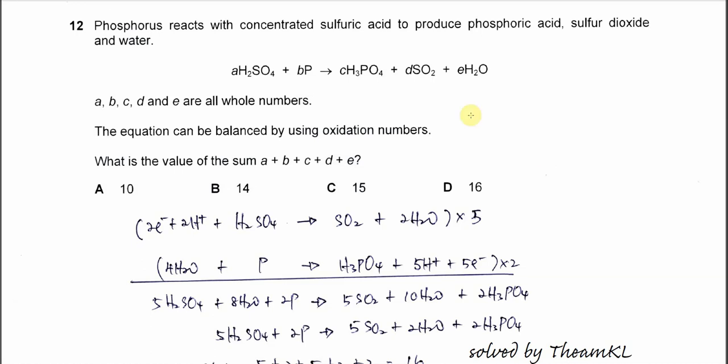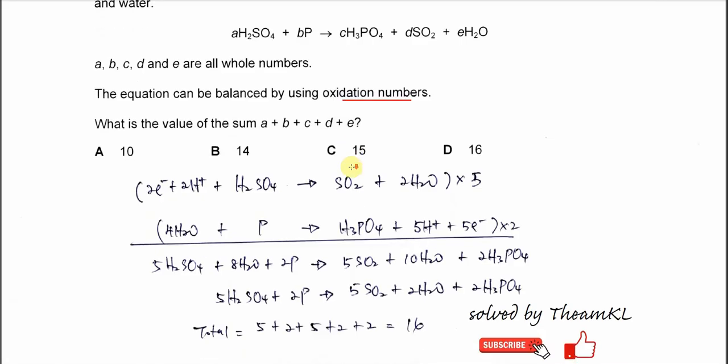Question: Phosphorus reacts with concentrated sulfuric acid to produce phosphoric acid, sulfur dioxide, and water. This is a reaction equation with unknown coefficients for these reactants and products. Where a, b, c, d, and e are all whole numbers, the equation can be balanced using oxidation numbers. What is the value for the sum of a + b + c + d + e?